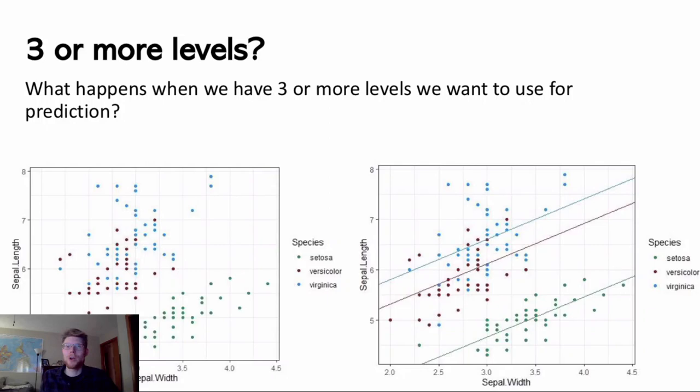You might be wondering what happens when we have three or more levels, since we've only talked about assigning 0s and 1s. Do we assign 0s, 1s, and 2s if we have three levels, or something else? We're going to get into that by looking at the iris plants example, where we'll try to model sepal length from sepal width and species.